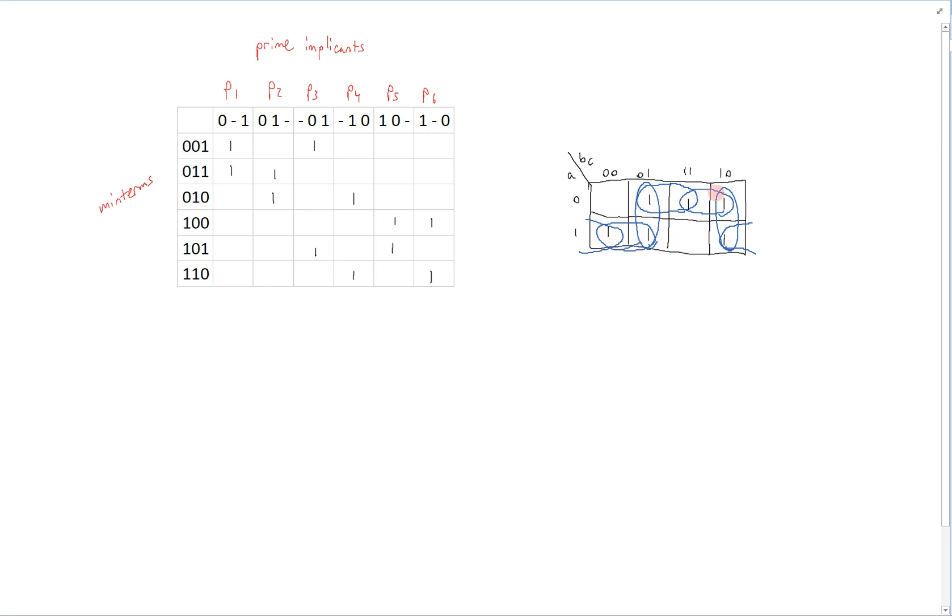So because they intertwine in this way, there are no dominance relationships, and none of them are essential necessarily, because another prime implicant can cover the same minterm. So what do we do in such a case?